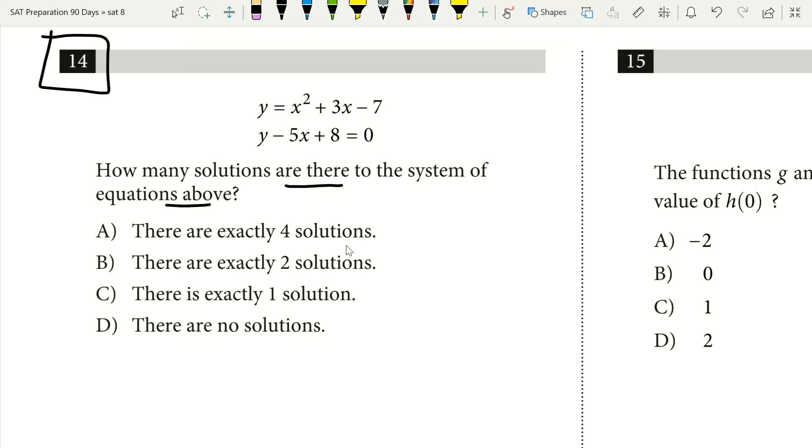So in order to solve for that, I'm going to set this bottom equation, y minus 5x plus 8, and get what y equals so that I can substitute in for y in the top equation to get one equation. So I'm going to add 5x and subtract 8 from each side. So now I have y equals 5x minus 8.